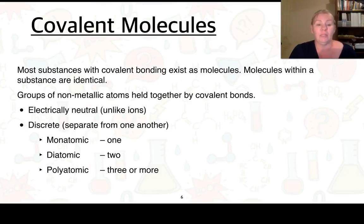A covalent molecule - most substances with covalent bonding exist as molecules. Molecules within a substance are identical and groups of non-metallic atoms held together by covalent bonds are electrically neutral and discrete, so they're separate from one another. You can have monatomic, which is one, diatomic, two, or polyatomic molecules, which are three or more.